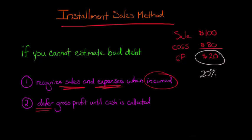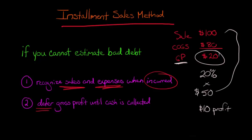This gross profit — $20 out of $100 of sales — is a gross profit percentage of 20%. So later, if we collect $50 of cash, we say 20% of $50 is $10. We can now recognize $10 of profit from the gross profit we previously deferred. And when the remaining $50 comes in, we can recognize the other $10 of gross profit.